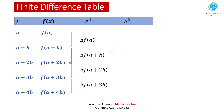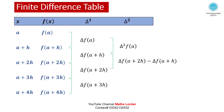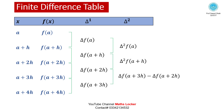Taking the second difference: delta²f(a) = delta f(a+h) minus delta f(a). Then delta²f(a+h) = delta f(a+2h) minus delta f(a+h), and delta²f(a+2h) = delta f(a+3h) minus delta f(a+2h).